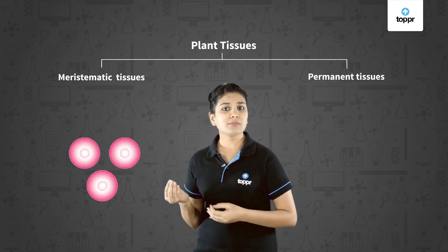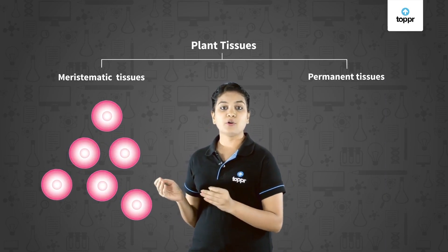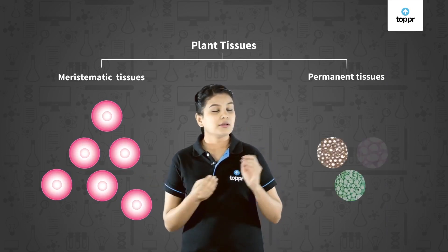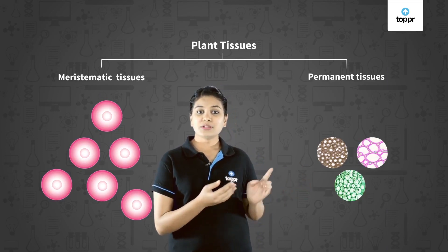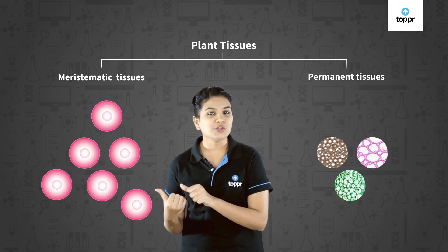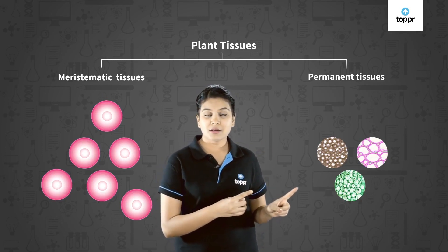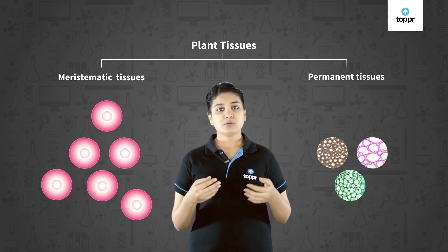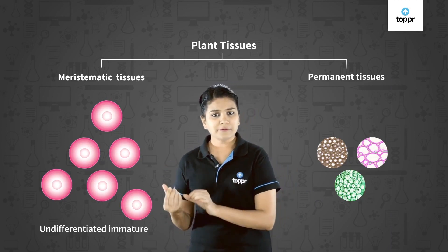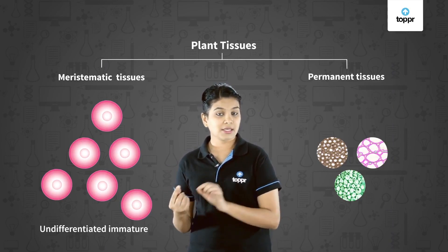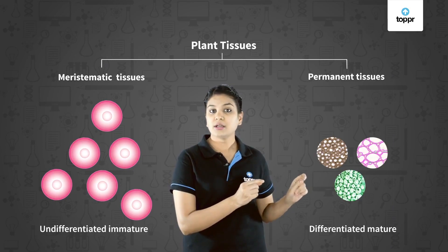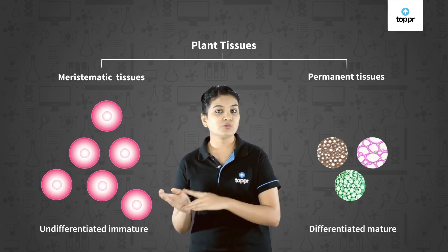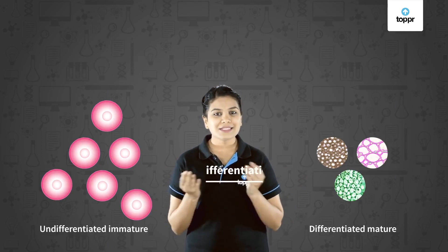Meristematic tissues divide throughout their lives to form new cells. When these new cells become matured, they get differentiated. These differentiated cells are what we call permanent tissues. This conversion of undifferentiated young meristematic cells into differentiated matured permanent cells is what we call cell differentiation.